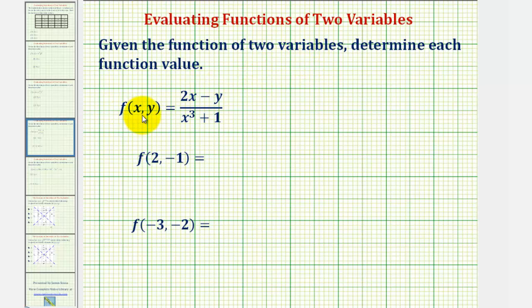Given the function of two variables, f of x comma y equals the quantity two x minus y divided by the quantity x cubed plus one, we're going to determine each function value.